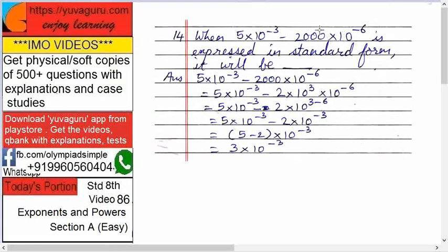So what have we to do? Convert this 2000 into 10 raised to 6 into 2 into 10 raised to something. So that's what we are doing. So 5 into 10 raised to minus 3 minus 2000 this. Let's make this, what is this? 2 into 10 raised to 3. Right? 2 into 1000 into 10 raised to minus 6.